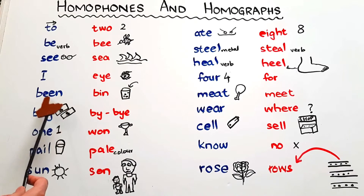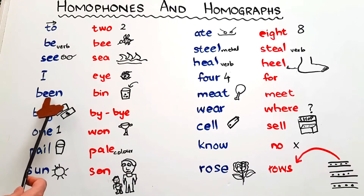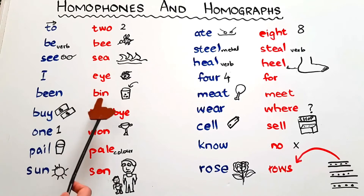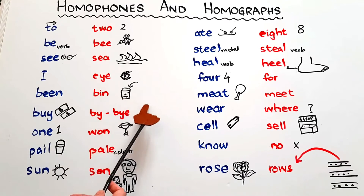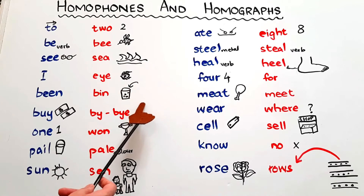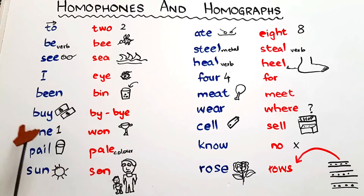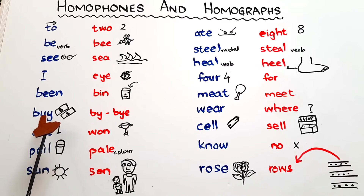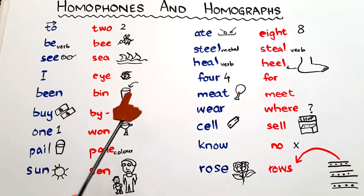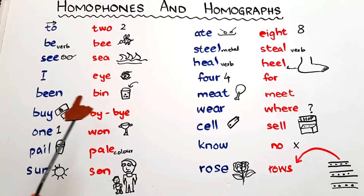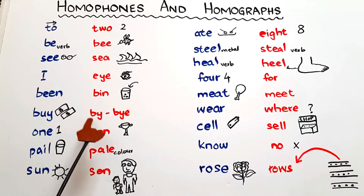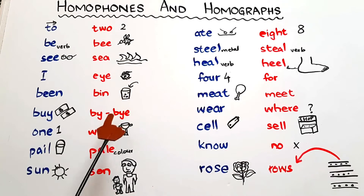'Been' — a verb, the third form of 'be', as in 'I have been to America' — and 'bin', the dust bin where you throw trash. Then we have 'buy', which means to purchase something — you buy something when you are doing some purchasing.